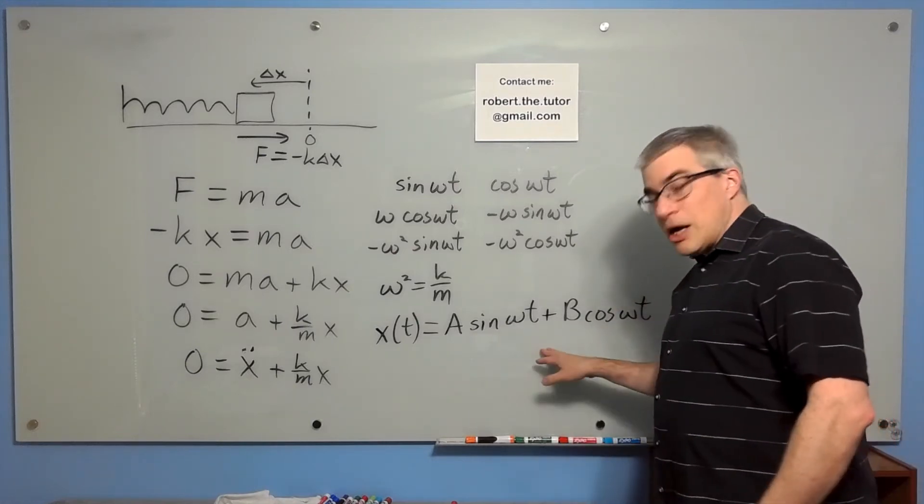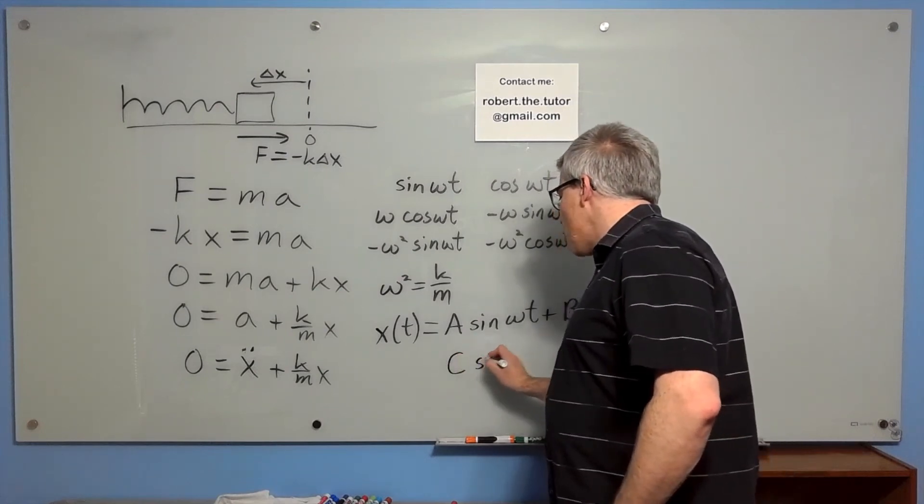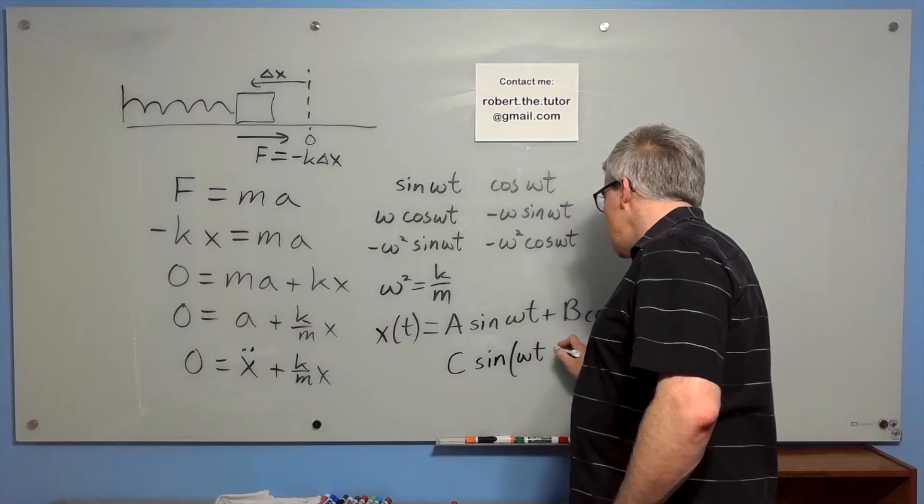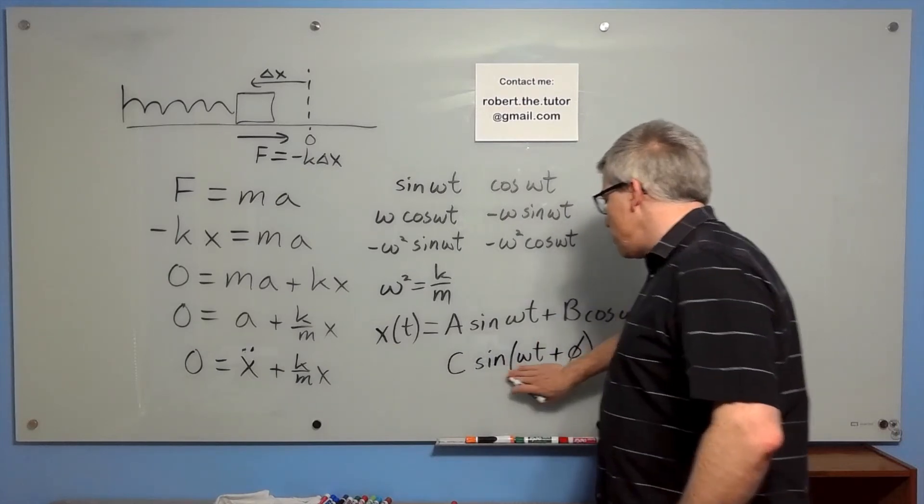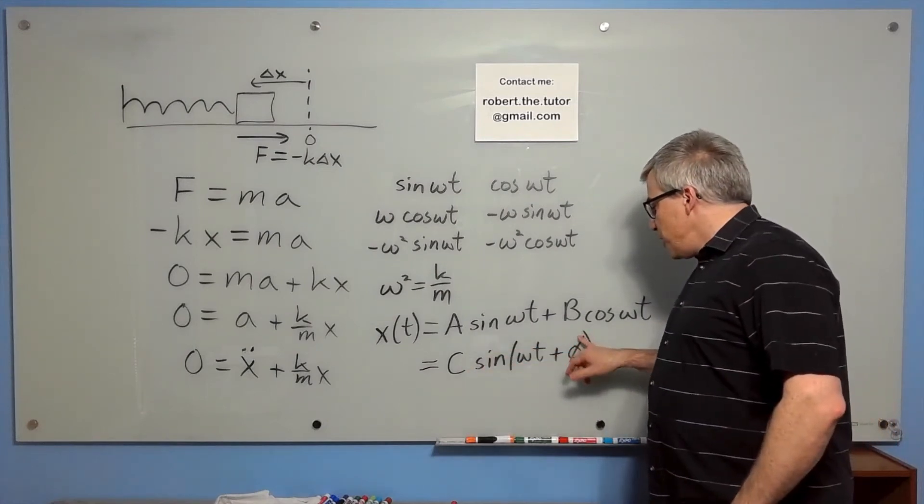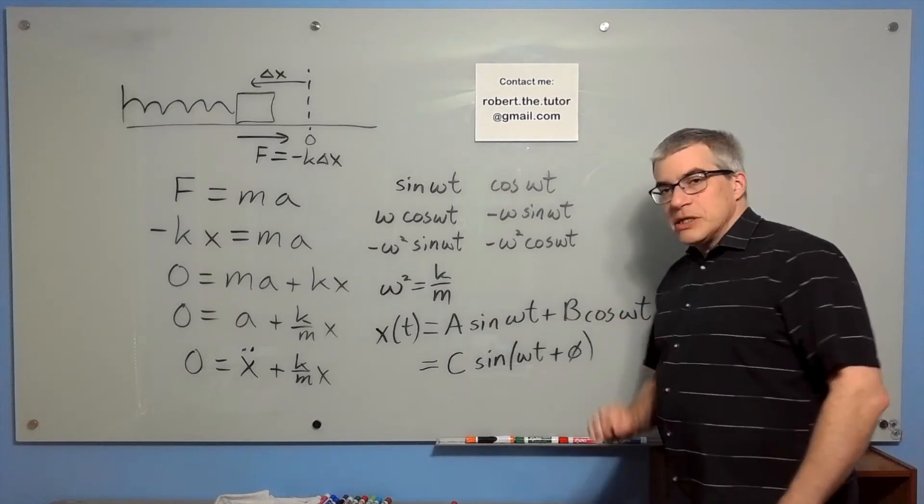And using trigonometry, it turns out you can make this some overall amplitude, sine of omega t plus or minus phi, depending how you define phi. So the behavior is always sinusoidal. If we essentially choose the situation so that phi is zero, we've basically cut the problem in half.